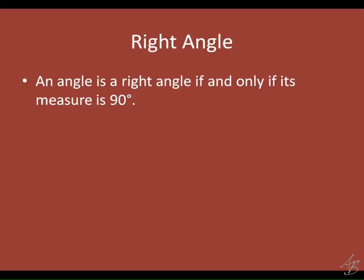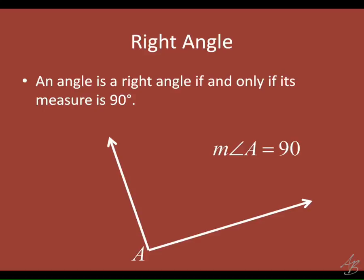What does a right angle look like? Everyone has something on your desk you can use — the corner of a piece of paper, the corner of your ID, the corner of your binder. Those are 90-degree angles. We use a special mark — a little box — to mark right angles in diagrams. So we write the measure of angle A equals 90, and in the picture we draw that box. You could hold up the corner of your paper and see that it is indeed a right angle.